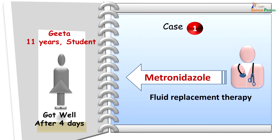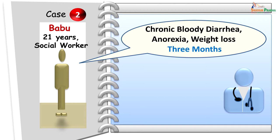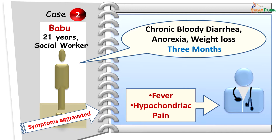This was the story of Geeta who suffered from amoebic dysentery. The best way to learn about any disease is to discuss real-time cases. Here is a second case: Babu, a 21 year old social worker for an NGO whose job involved field visits to collect data. He started having symptoms of chronic bloody diarrhea, anorexia, and weight loss. He neglected the symptoms for quite some time and only approached the doctor when symptoms aggravated and he started developing fever and hypochondriac pain.